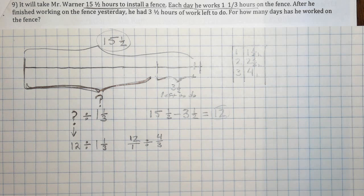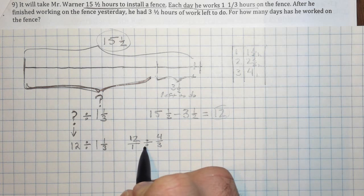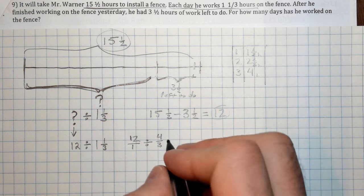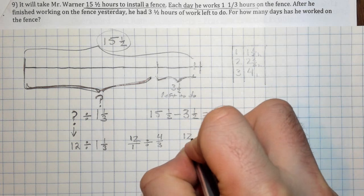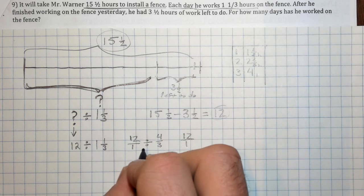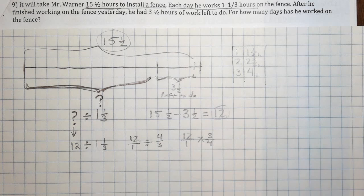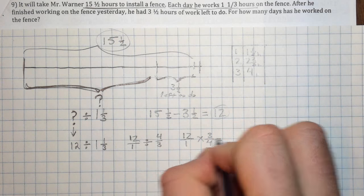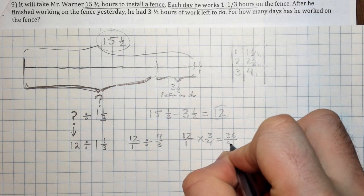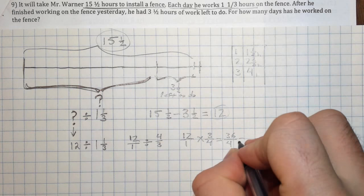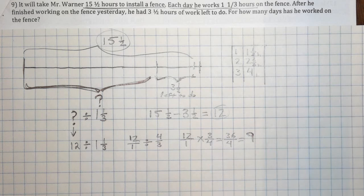Okay. Then we will apply our algorithm, right, keep, change, flip. So we'll keep this first fraction, we'll change this to multiplication, and we'll flip this. So my next step will be 12 over 1, keep, we'll change this to multiplication, we'll flip this to three fourths. Okay, and we'll be able to get our final answer, 36 fourths, which simplifies to nine wholes. So just nine.